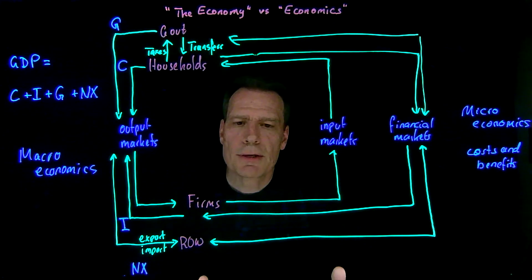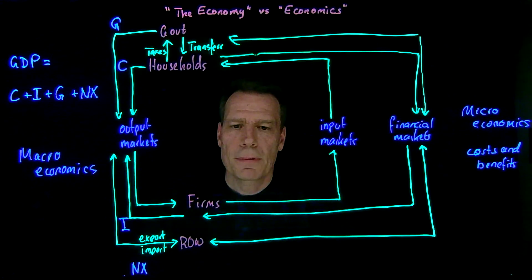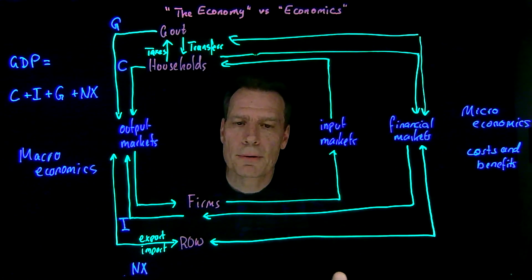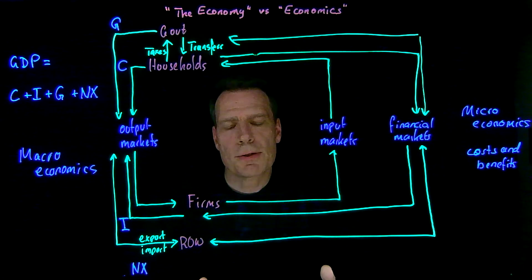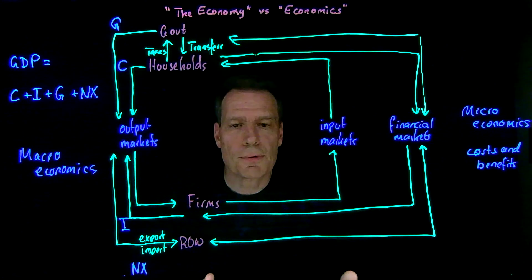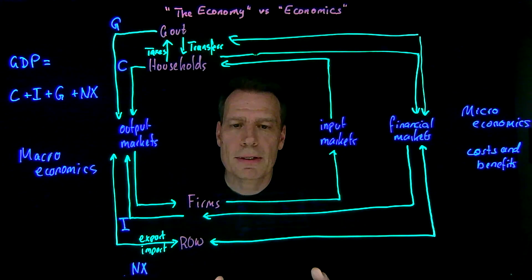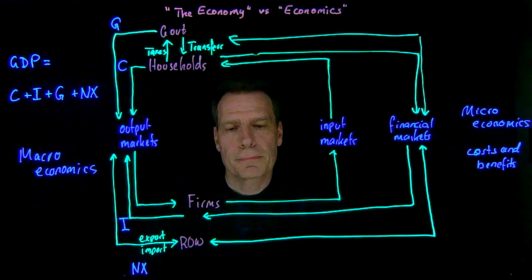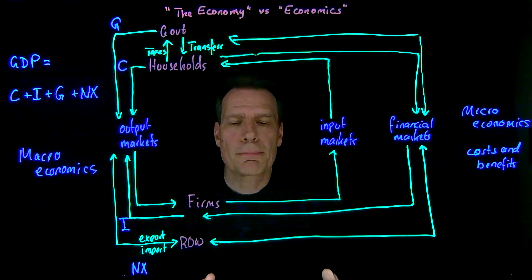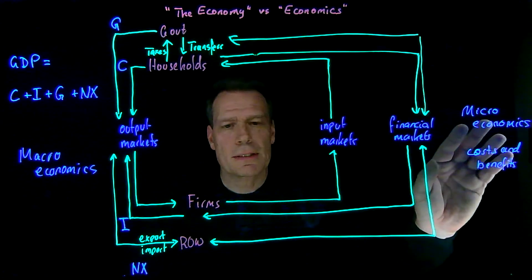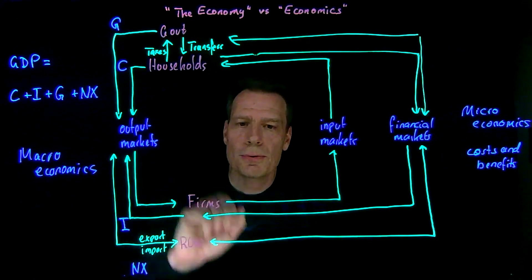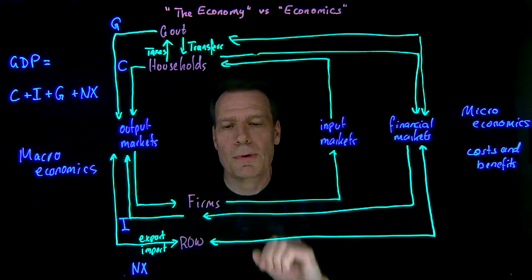Microeconomists also study situations where people make decisions without explicit money costs and benefits. When you decide how much to study for this course, you are making an investment of your time, effort, and energy, and you might get the benefit of understanding economics better or getting a better grade. You are weighing costs and benefits as you decide how much to study versus doing other things in life — yet none of those have anything to do with money.